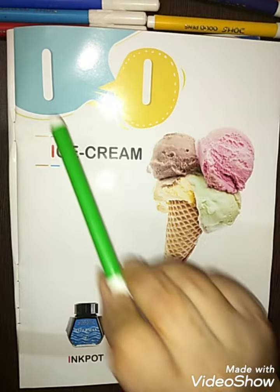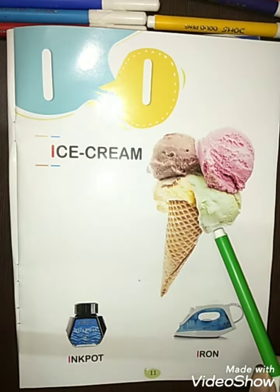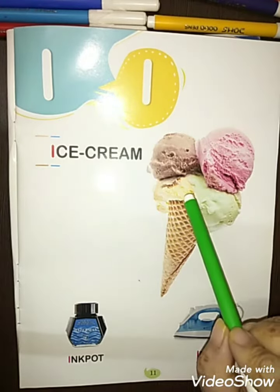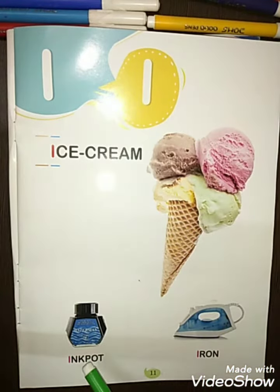Which alphabet is this? I. I for ice cream, I for ink pot, I for iron. I for ice cream, I for ink pot and I for iron.